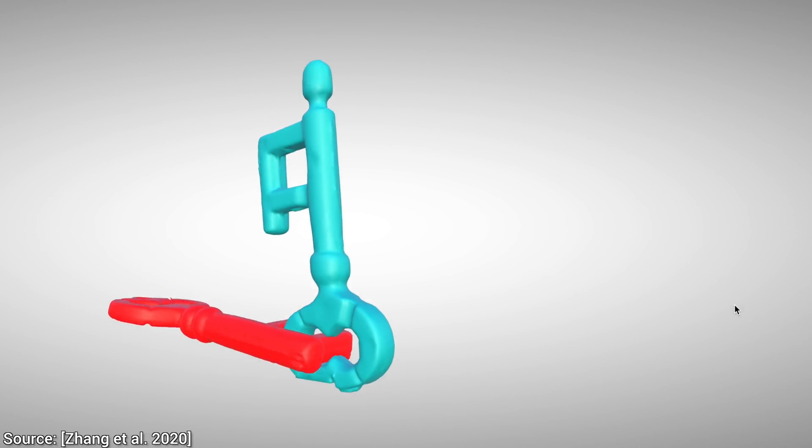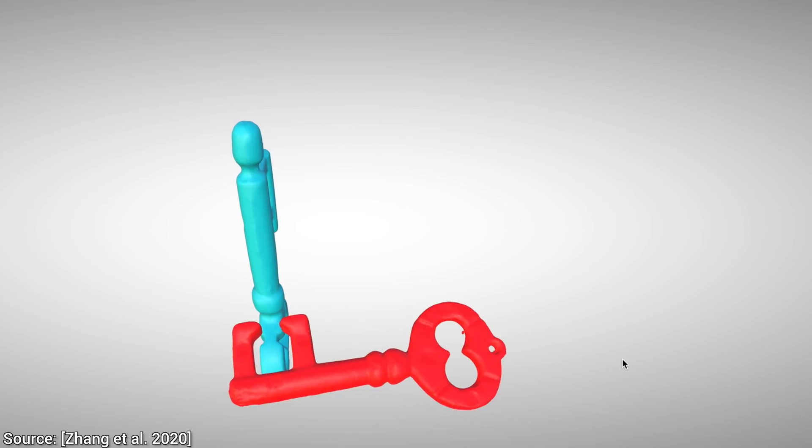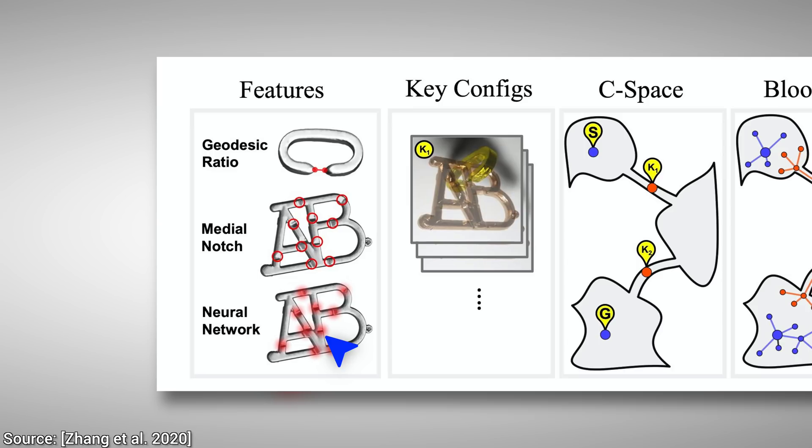So, how does this wizardry work exactly? The key techniques here are tunnel discovery and path planning. First, a neural network looks at the puzzles and identifies where the gaps and notches are, and specifies the starting position and the goal position that we need to achieve to finish the puzzle.